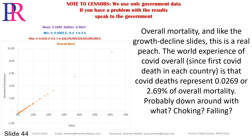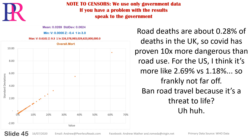Like the growth-decline slides, this is a real result: the world's experience of COVID — overall since the first COVID death in each country — is that COVID deaths represent 0.0269, or 2.69%, of overall mortality. For comparison, road deaths are around 0.28% of deaths in the UK, so COVID has proven about 10 times more dangerous than road use. For the US it's more like 2.69% versus 1.18% — not far off banning road travel because it's a threat to life.